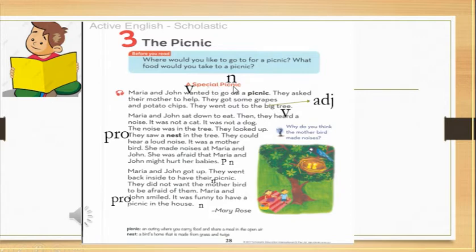A special picnic. Now Maria and Joan sat under a tree. They went out to make a picnic. But look at the tree. What can you see on the tree?